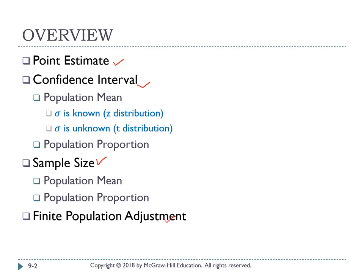Under confidence interval, it can be divided into population mean and population proportion. Under sample size, it is also divided into population mean and population proportion. Under population mean in the confidence interval, you will learn about z distribution and t distribution. When we talk about z distribution, it focuses on the population; when we talk about t distribution, it focuses on your sample.